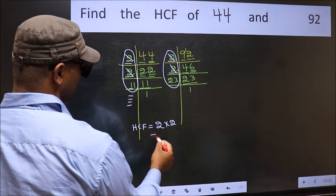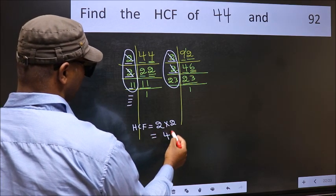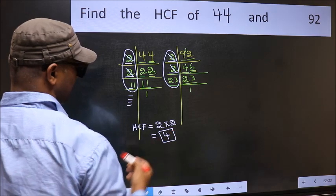So our HCF is 2 times 2, which equals 4. Therefore, 4 is our HCF.